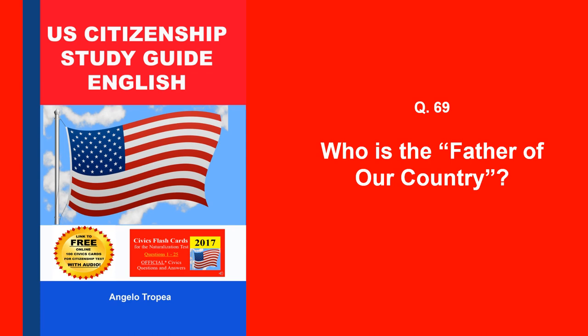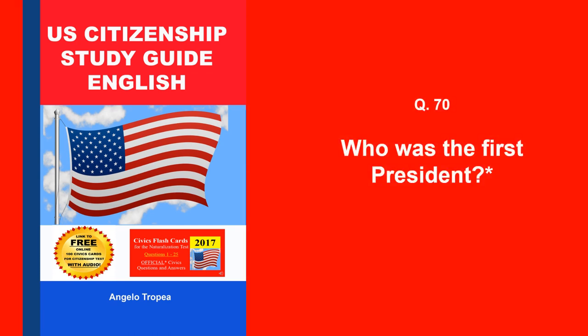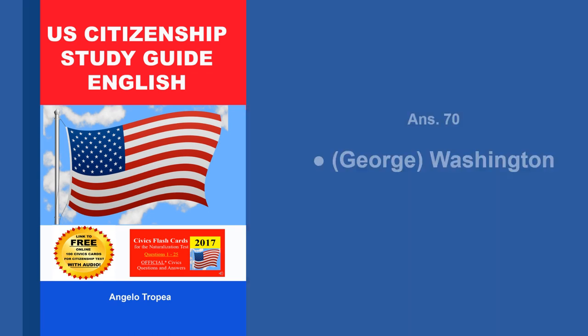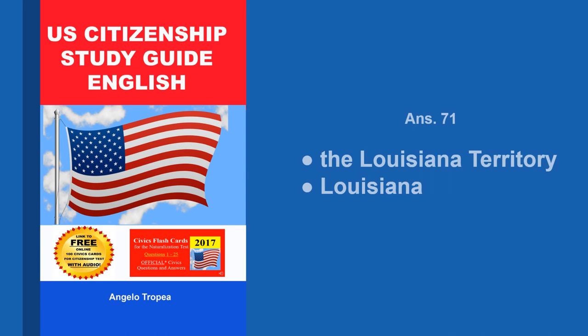Who is the father of our country? George Washington. Who was the first president? George Washington. What territory did the United States buy from France in 1803? The Louisiana Territory.